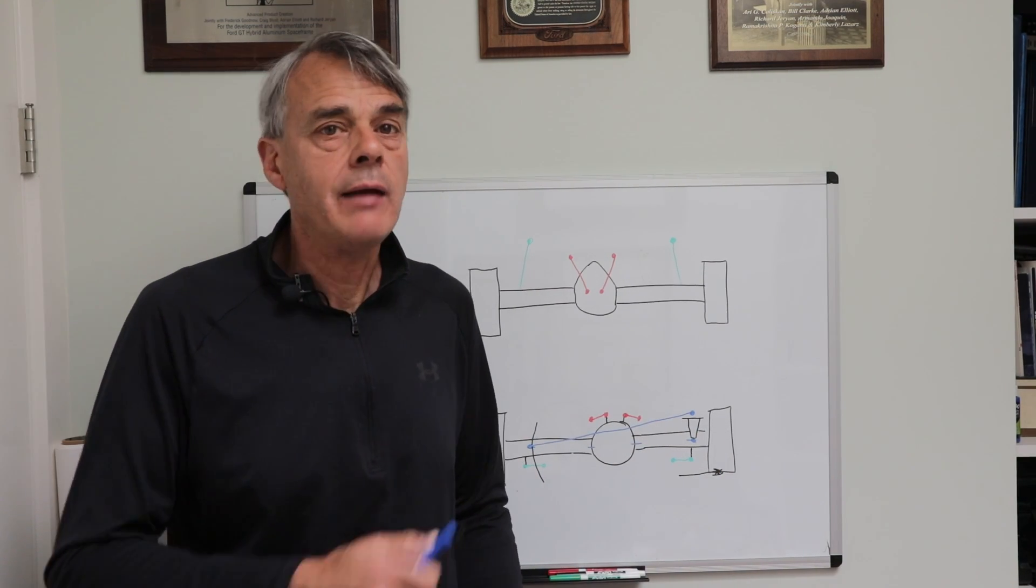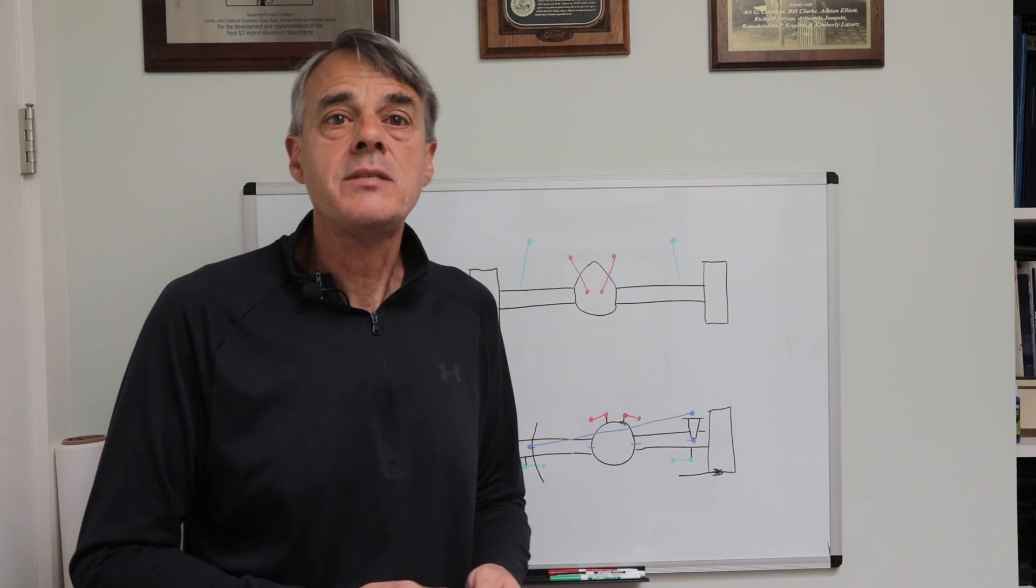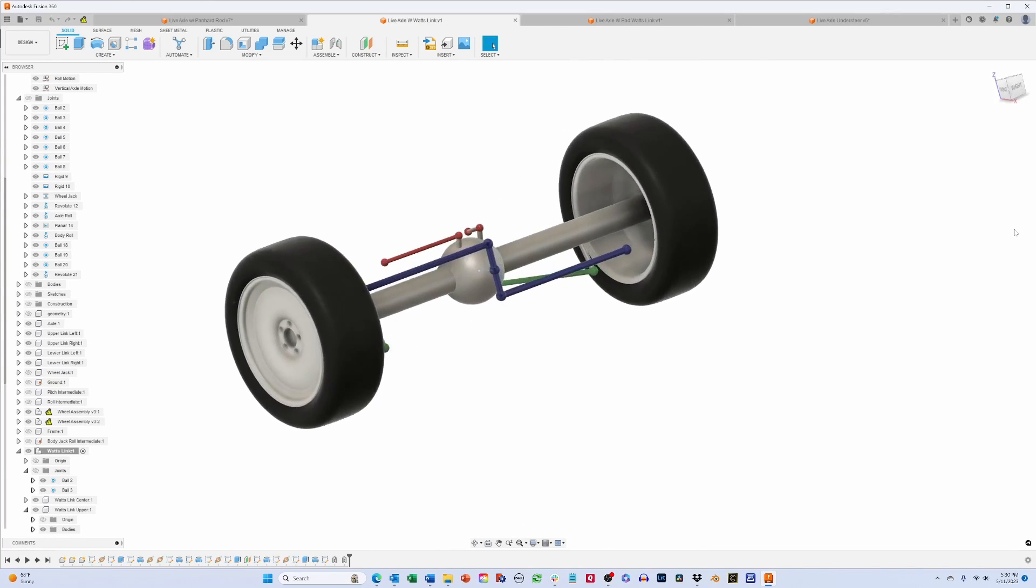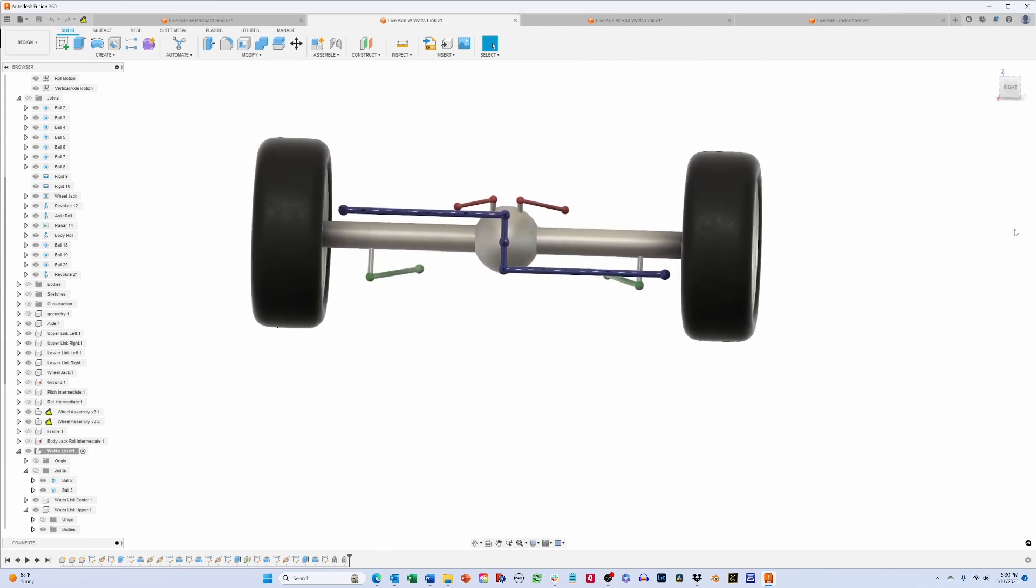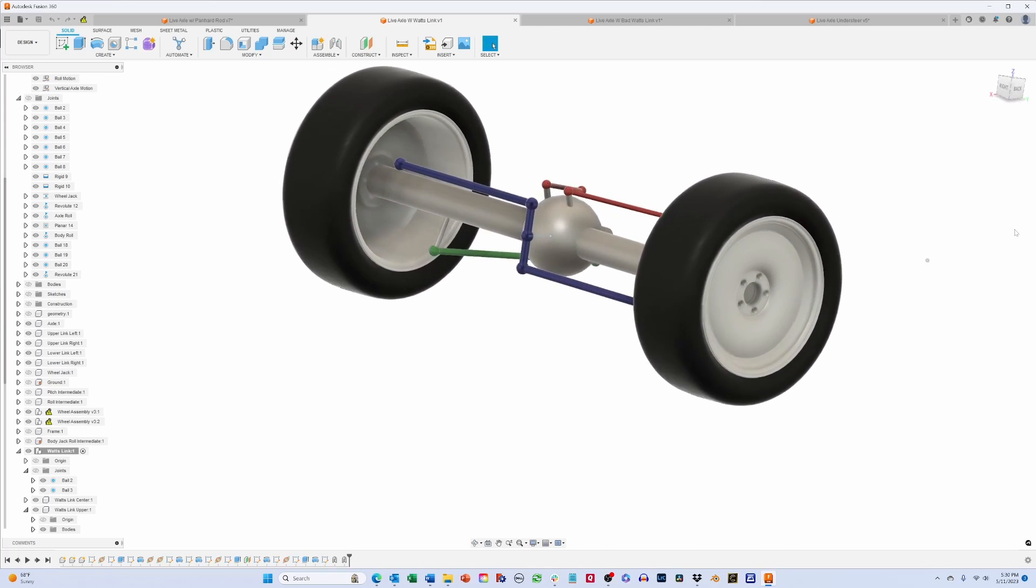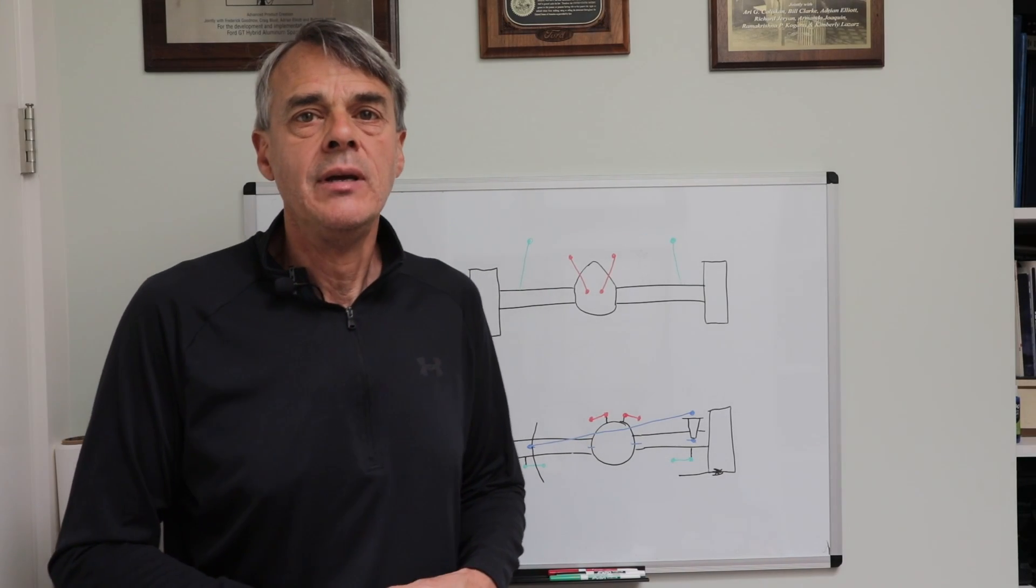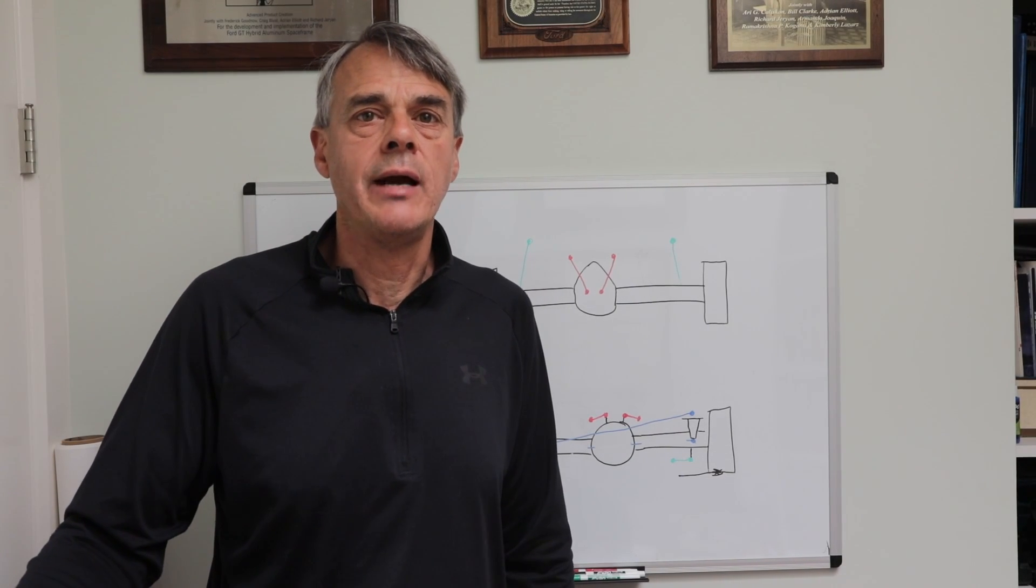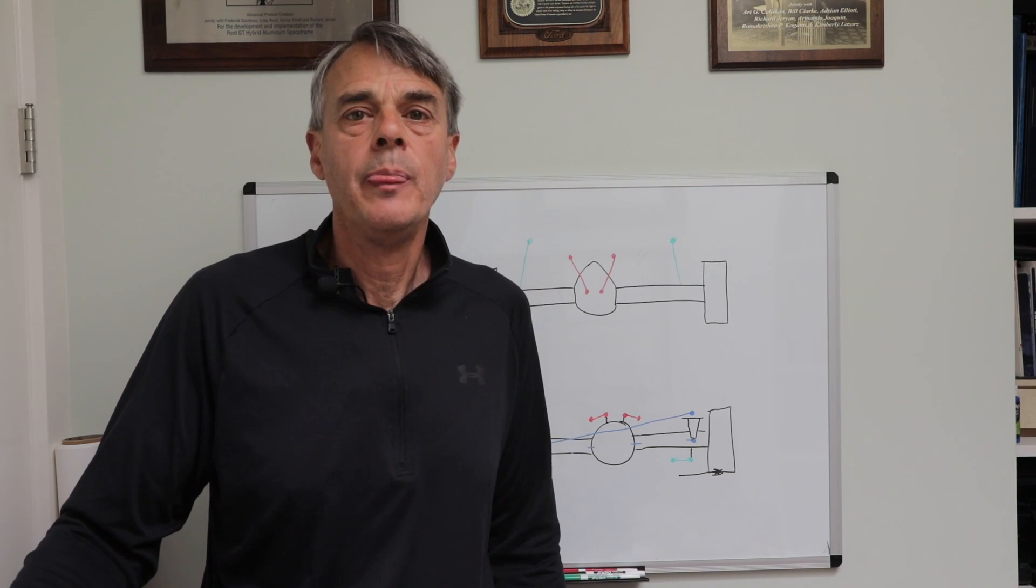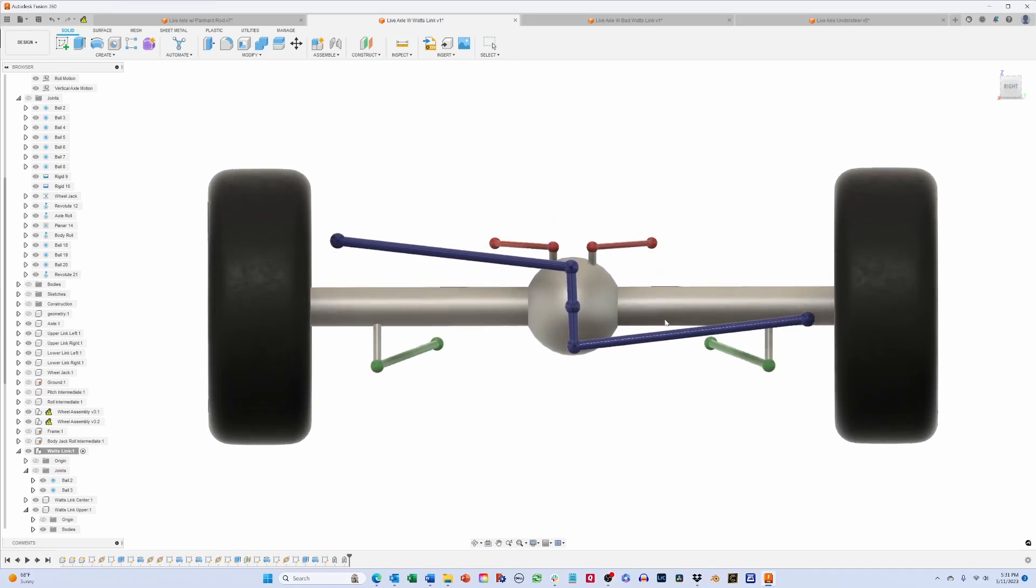The Watts link, on the other hand, doesn't have these issues and limitations, but it is a lot more complex. Instead of a single link, the Watts link uses three, a vertical center link and two upper and lower horizontal links. The center link is mounted on a central pivot to the axle housing and the upper and lower links are each attached to the center link on one end and to the vehicle on the other. If the locations of the links are designed correctly, the result will be that the center pivot, where it is attached to the axle, will move up and down in a straight line and keep the axle moving up and down in a straight line as well.